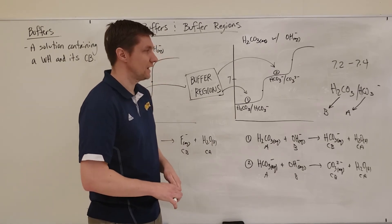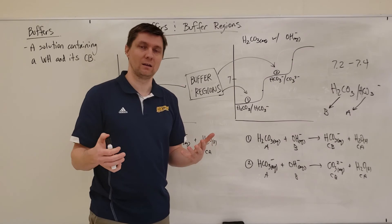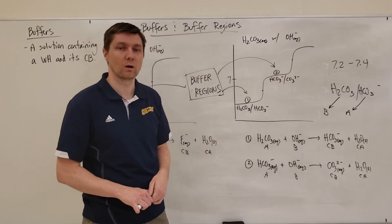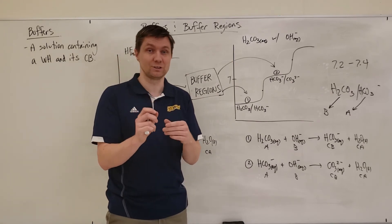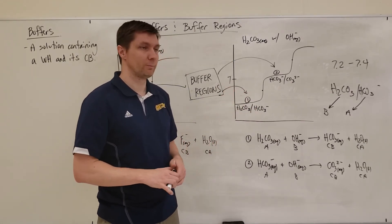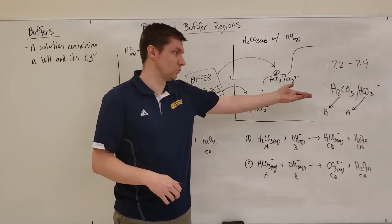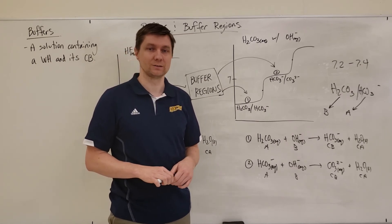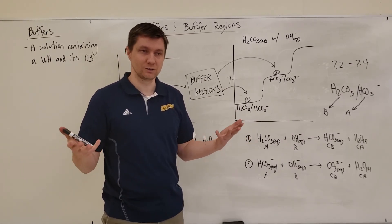And so this is actually applicable to humans and our blood. So our blood has to sit within a range of 7.2 to 7.4. And it's a very small range. Anything below or above that is fatal to humans. And so our blood is made up of a variety of different types of buffers. And this is one of them, carbonic acid with hydrogen carbonate ions.